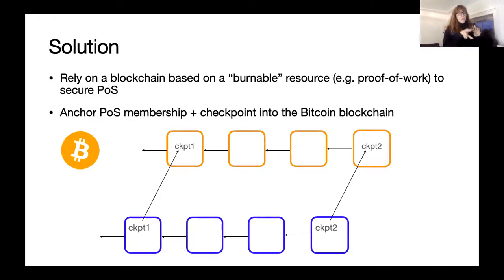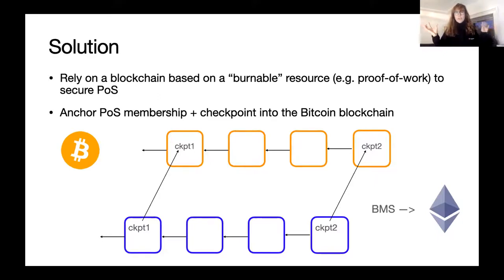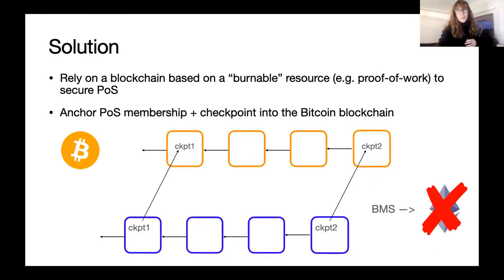We have our blue proof-of-stake blockchain and our orange Bitcoin blockchain. We push checkpoints to the Bitcoin blockchain so we can use them to verify which chain is the right one. One difference from the original BMS paper is that they used the Ethereum blockchain for checkpointing, which has an extensive smart contract platform. However, since Ethereum is moving to proof of stake, that approach is no longer viable because proof of stake is vulnerable to the exact same attack. Our work is to implement the BMS paper on Bitcoin, which is more challenging because Bitcoin doesn't have the same smart contract properties.